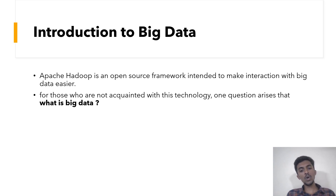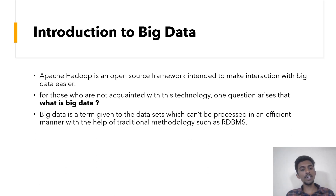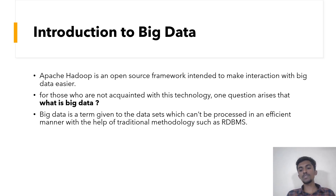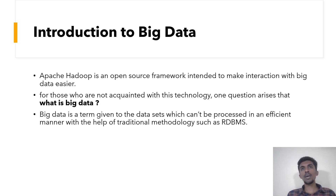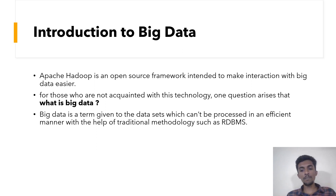People who don't know about this technology may get one question: what is Big Data, and what is the Hadoop ecosystem? So let me tell you first what is Big Data. Big Data is a term given to data sets which can't be processed efficiently with the help of traditional methodologies such as RDBMS. We know DBMS — database management system — and RDBMS, relational database management system, where we represent data in the form of tables with rows and columns. But where we can't process data that efficiently, this is where Big Data comes into the picture.